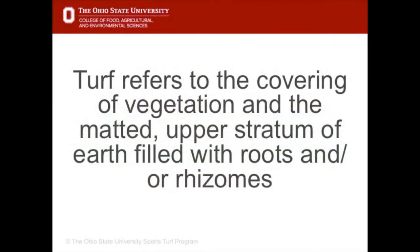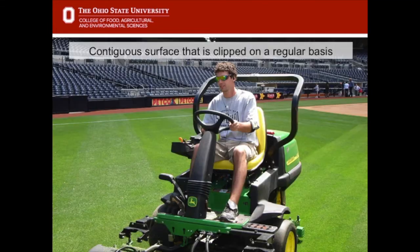Turf refers to the covering of vegetation and the matted upper stratum of earth filled with roots and rhizomes. Turf is a contiguous surface that is clipped or mowed on a regular basis.